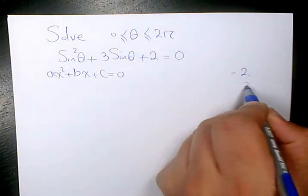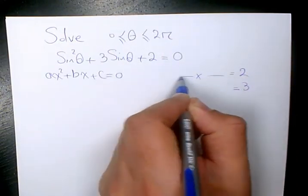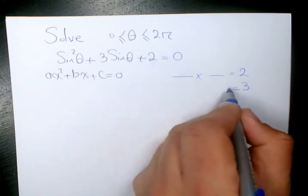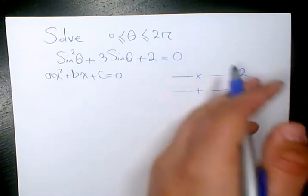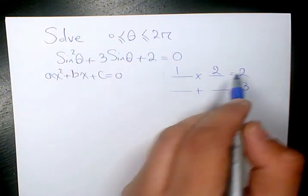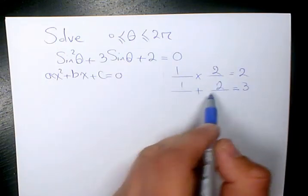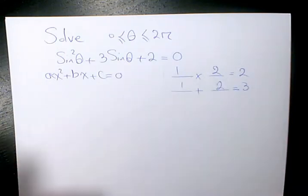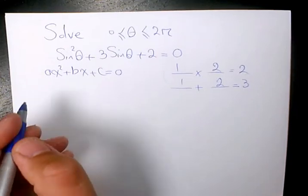We have 2 here, we have 3. We're looking for 2 numbers multiplied by 2, and 2 numbers add to 3. So 2 times 1 is going to be 2, 2 plus 1 is going to be 3. So the numbers we have is positive 2 and positive 1.